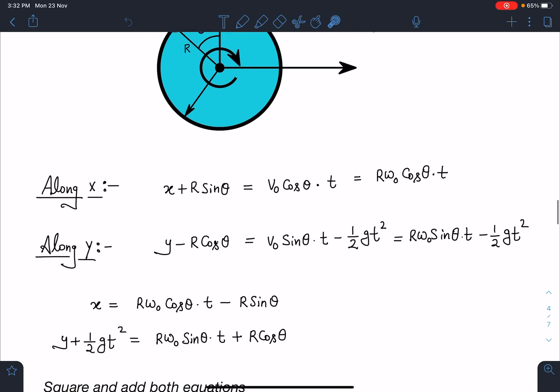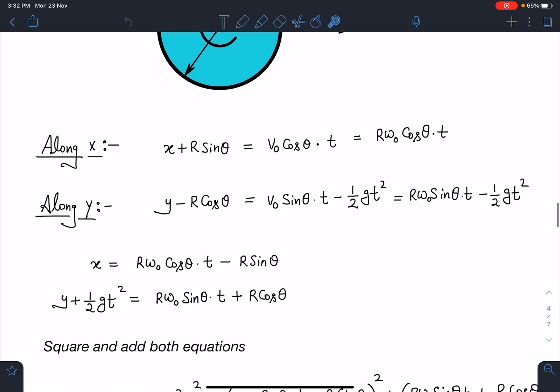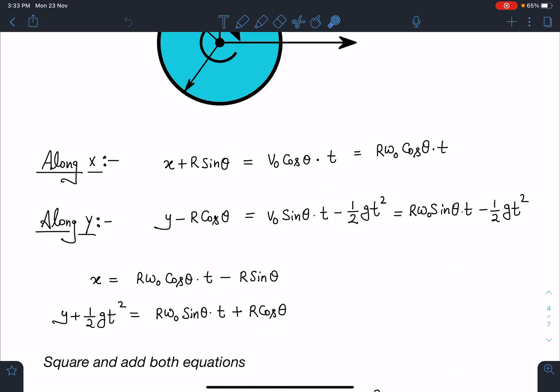If I arrange these equations further, I am going to get x = Rω₀ cos θ t - R sin θ and y + ½gt² = Rω₀ sin θ t + R cos θ. θ is a random location, so I want to get rid of this θ. What I am going to do is square and add these two equations.